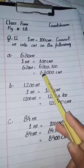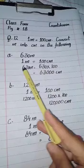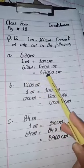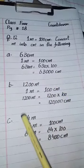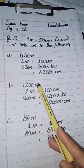And it becomes 63,000 centimeters. So 630 meters equals 63,000 centimeters. Next question is 1200 meters.